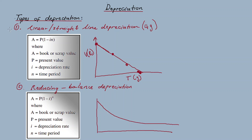Now, since we have an idea of the two types of depreciation — the linear and the reducing balance — let's work through a few examples where I show you how to use the formula for both straight line and reducing balance.